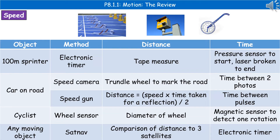Depending on which object we're trying to measure the speed of will determine the method we would choose. For a 100 metre sprinter, for example, we'd use a tape measure to measure the distance, and then to work out the time we'd use an electronic timer with a pressure sensor to start it on the blocks and a laser broken at the end to stop it.